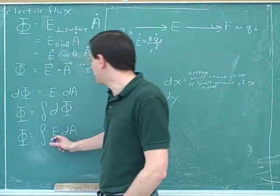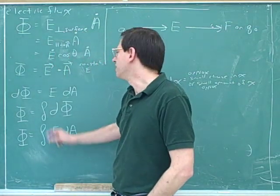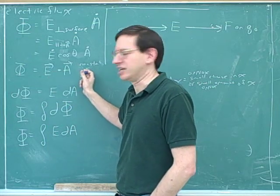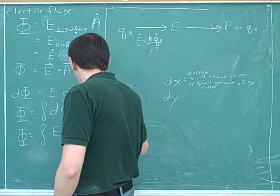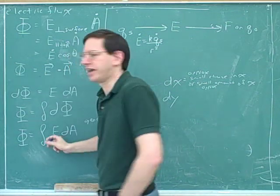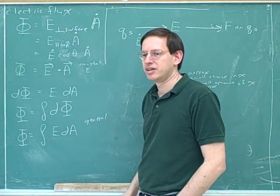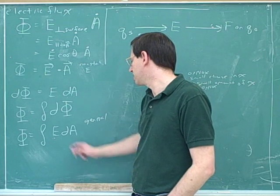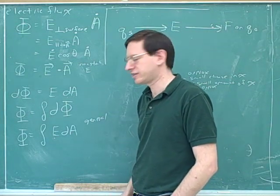This is the general formula for electric flux. The simpler formula is only for electric flux when you have a constant E. This integral form is the general formula for electric flux when E is changing. So when E is changing, you're going to use this integral formula for the electric flux.